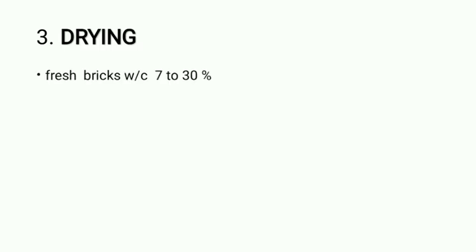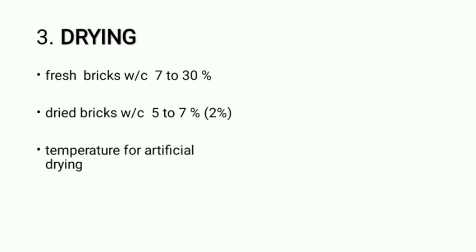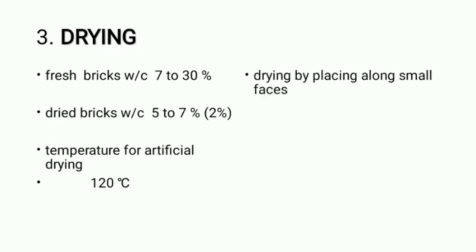Next is drying. Fresh clay bricks, that is after moulding, will have about 70–30% water content. After drying, it will have only up to 5–7% water. In some textbooks, it is given that the water content will reduce up to 2%. If we are carrying out artificial drying, the temperature is about 120 degrees Celsius. The drying is done by placing bricks along their small face so that the large area is exposed to the atmosphere.